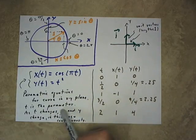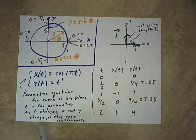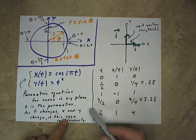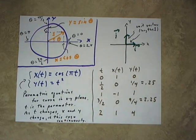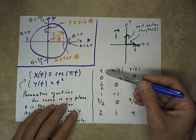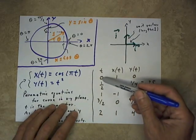t is going to be our parameter. So as the value of t changes, the values of x and y are going to change. In this case, they're going to change continuously, and that's going to result in a curve in the xy plane. In order to get a handle on how that works, let's just let t take the values 0,